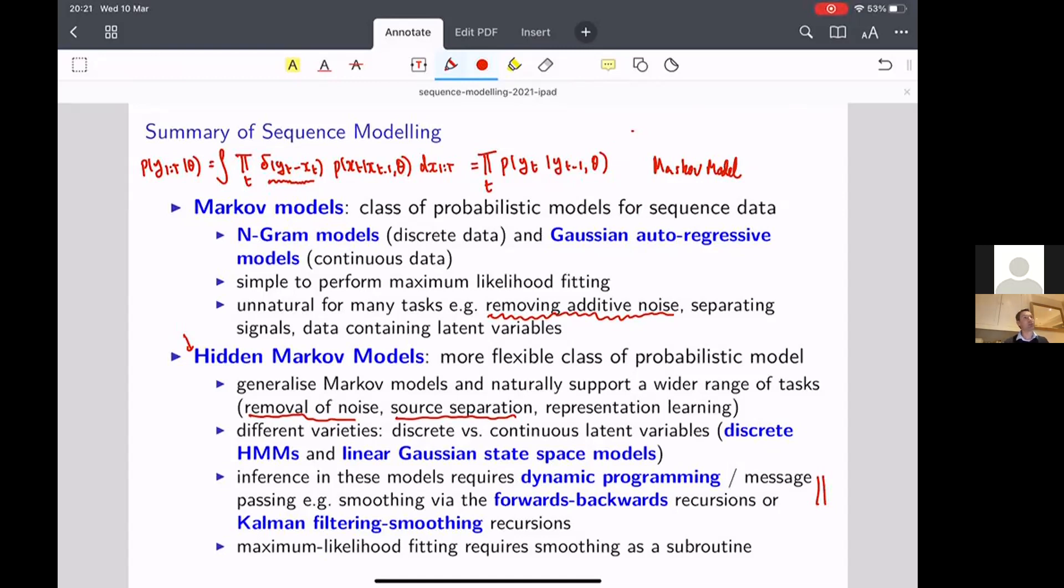This is this general principle that if there's special structure in your problem, here it being the Markov relationship, you can leverage that special structure to calculate things like sums or integrals much more efficiently than the naive method, which would suggest they should scale exponentially in the length of the time series.